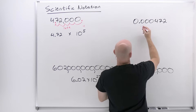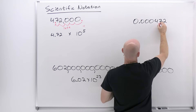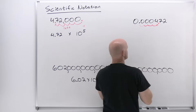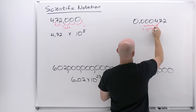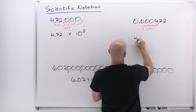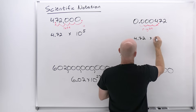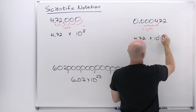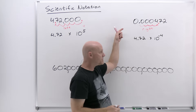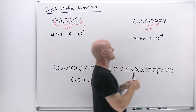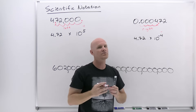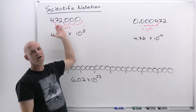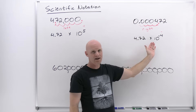For a small number like 0.000472, we move the decimal four places to the right to get one digit left of the decimal. We end up with 4.72 × 10⁻⁴. Since it's a number smaller than one, it's a negative power of 10. My personal preference: for numbers larger than one, positive power of 10; for numbers smaller than one, negative power of 10.